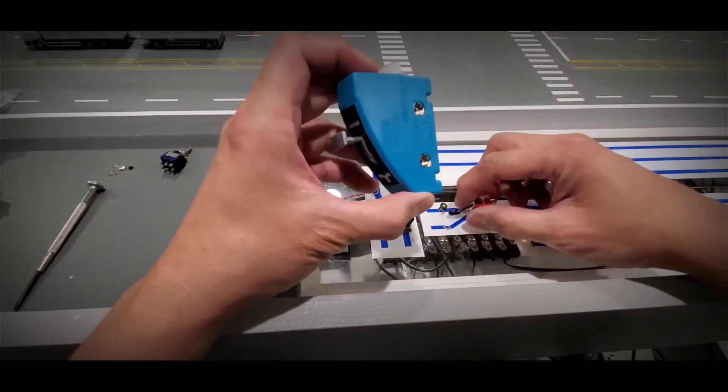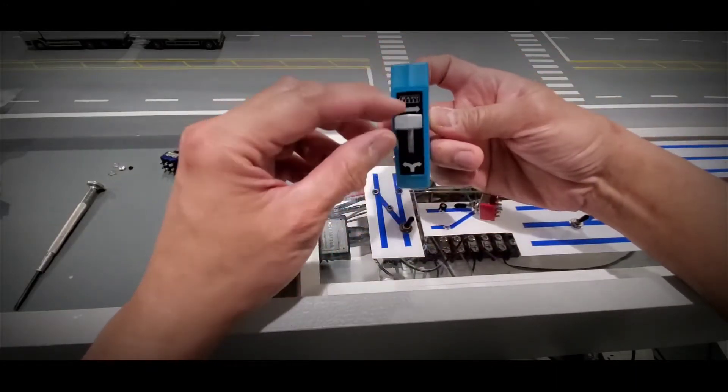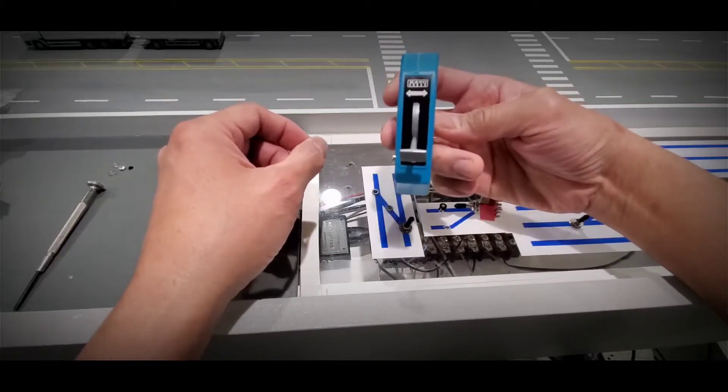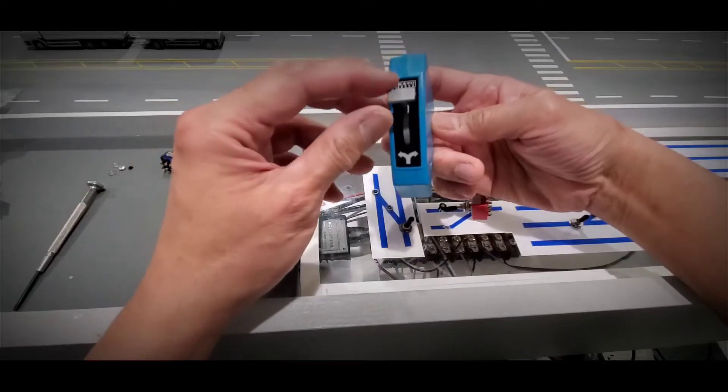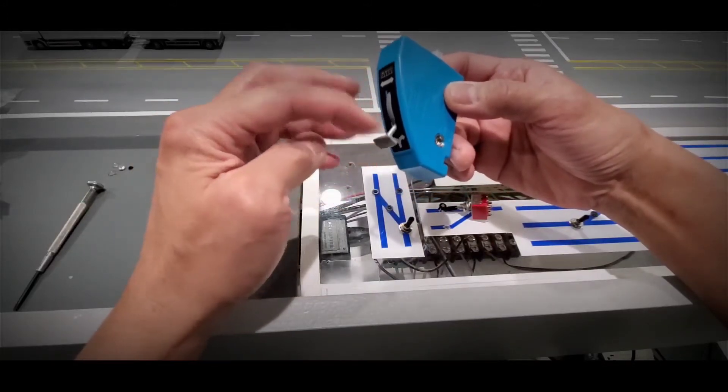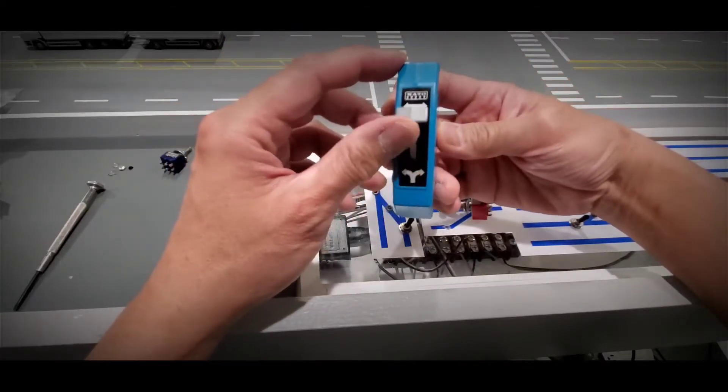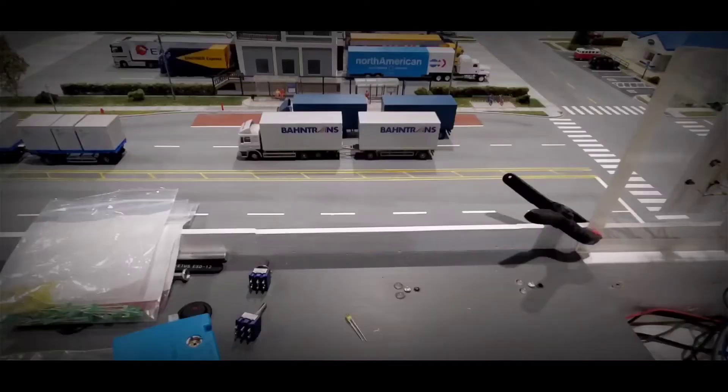Kato uses this switch here to control their electric turnouts. The way it works is that it provides a momentary supply of current to the turnout and at the same time reversing the polarity of the voltage supply that the turnout requires. That process is what we should try to duplicate if we're replacing the switch with a toggle switch in the panel.